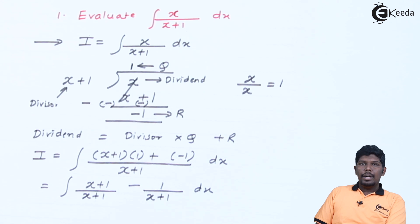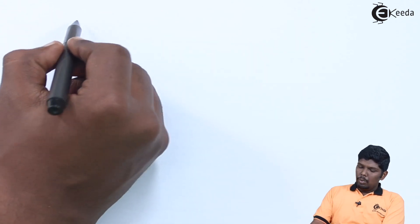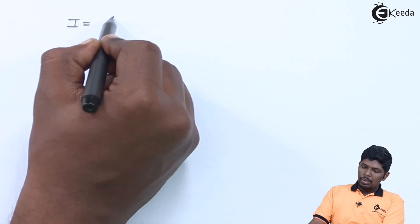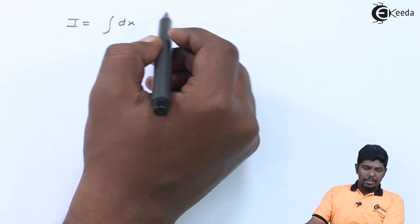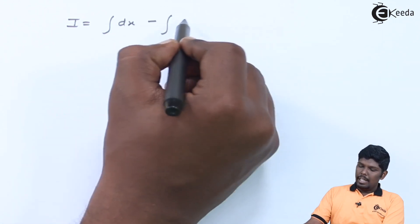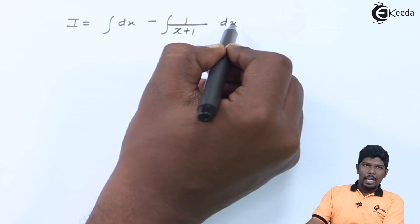Now we can also separate the integration. Here x plus 1 will be cancelled and we have only 1 dx left. That will give you I is equal to integral dx minus integral 1 upon x plus 1 dx.